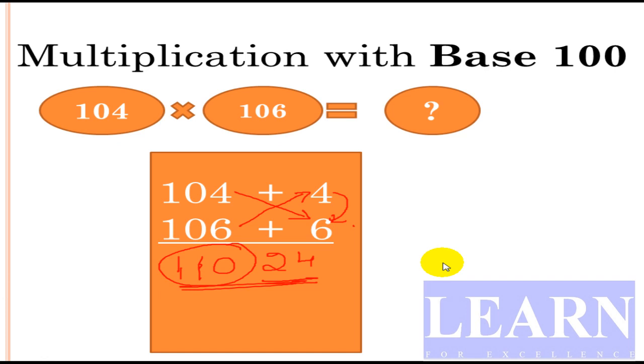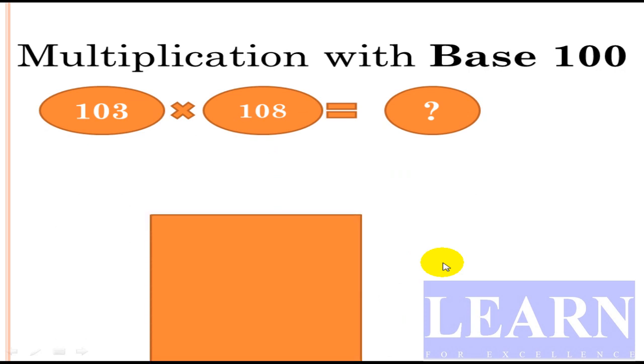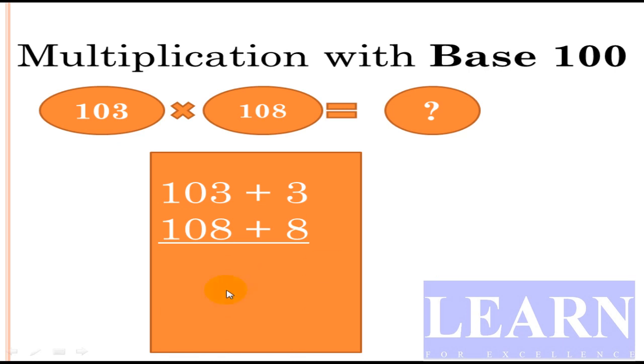We'll write 103 into 108 in the same format. 103 is nothing but 103 plus 3, 108 is nothing but 108 plus 8. So what we have to do here? We have to do cross addition. 108 plus 3 is 111, or 103 plus 8, both are same.